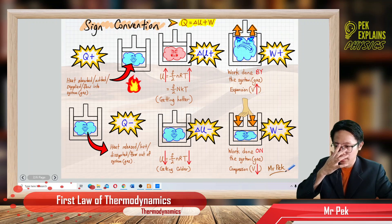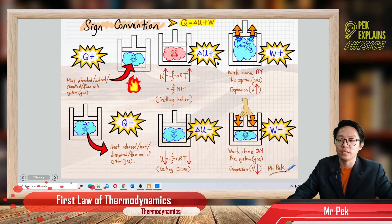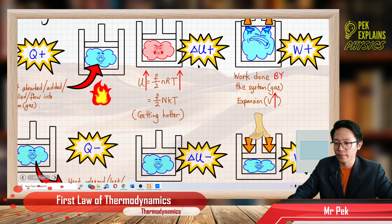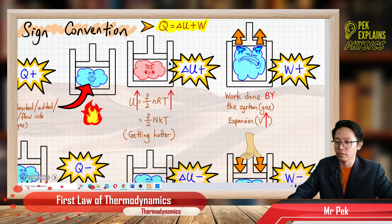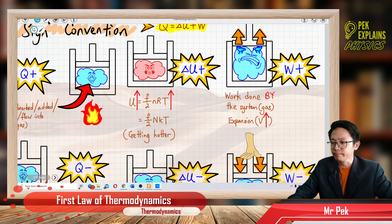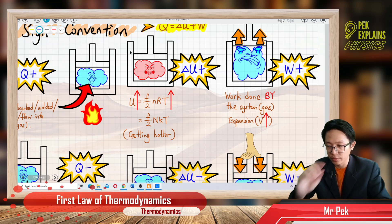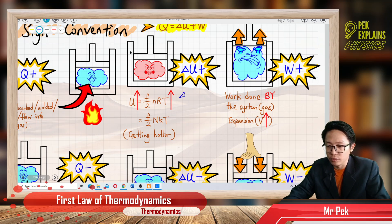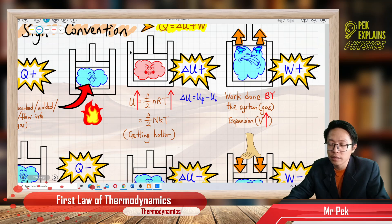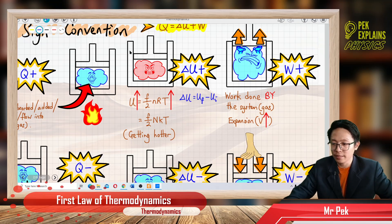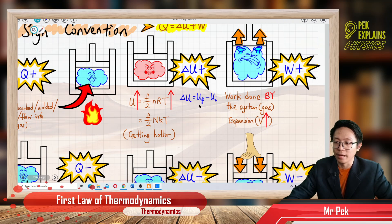Now the second symbol: delta U. What is delta U? Delta U is the change in internal energy, which is the final internal energy minus the initial internal energy. That is the change in internal energy.